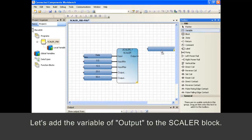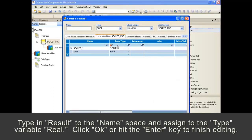Let's add the variable of output to the scalar block. Type in Result to the namespace and assign to the type variable real. Click OK or hit the Enter key to finish editing.